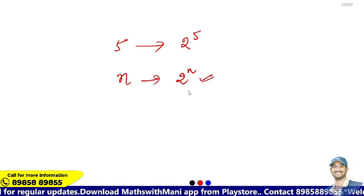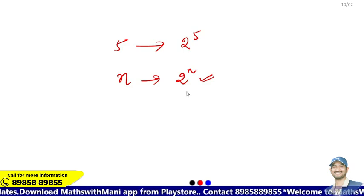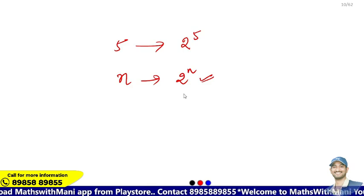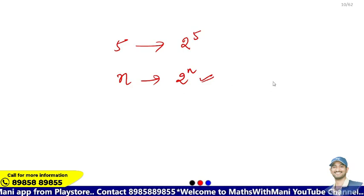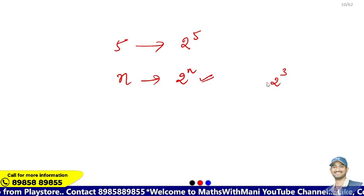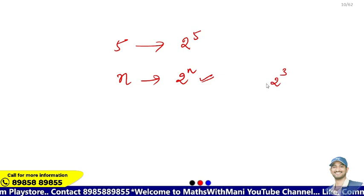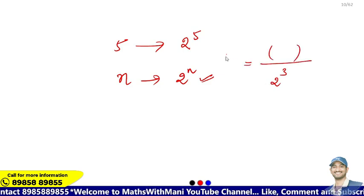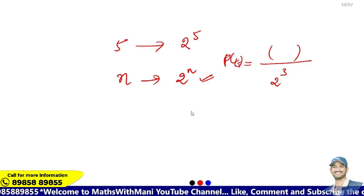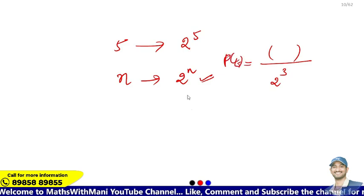For example, with 3 coins, let's find the number of outcomes and the probability of getting at least 2 heads.